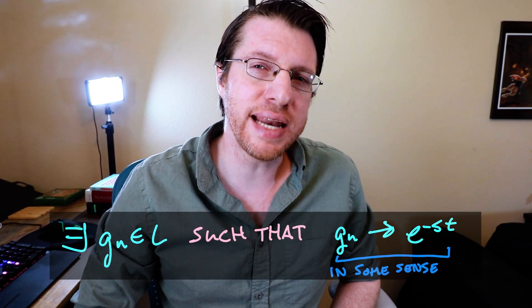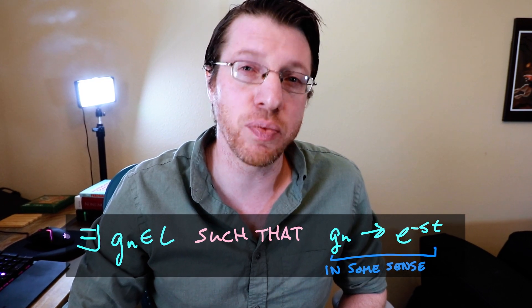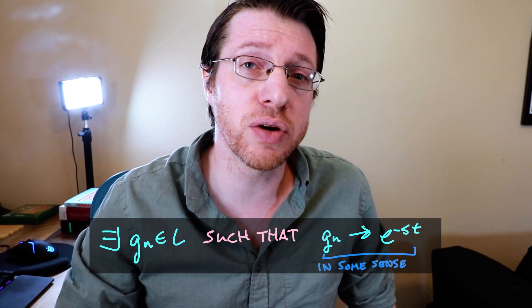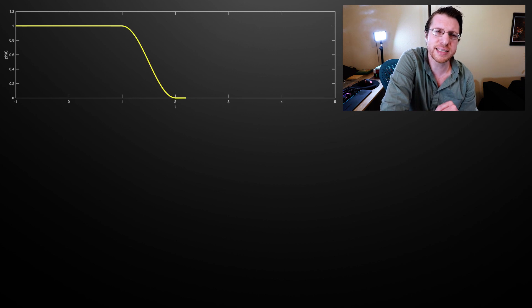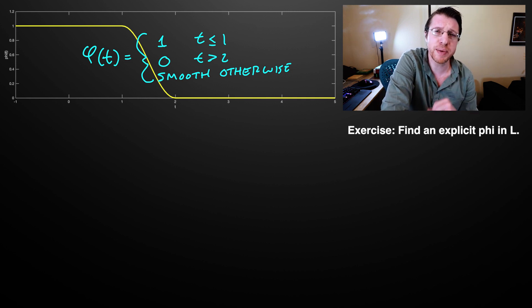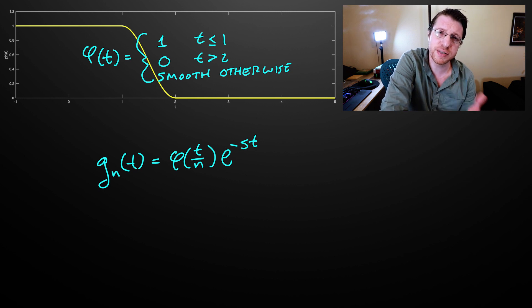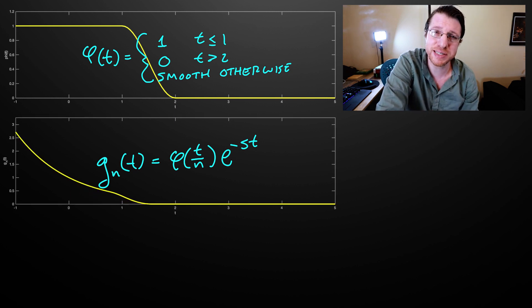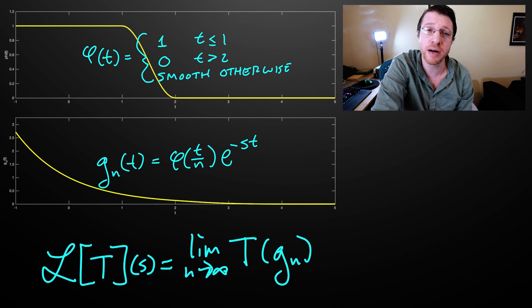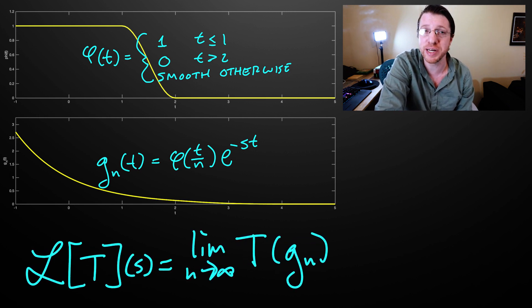That step is to approximate e to the minus st with functions in L. It turns out that for any s, we can get a close approximation of e to the minus st with functions in L, where the difference goes to zero according to our semi-norms, restricting to those where the real part of s is bigger than a. We do this by taking a smooth function phi that is one for t less than or equal to one and zero for t bigger than two. Then we define G_n equal to phi of t over n times e to the minus st, and this converges to e to the minus st. The Laplace transform of a distribution at a point s is then given by the limit of the action of the distribution on this sequence of G_n's.